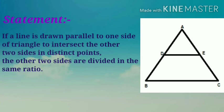The other two sides are divided in the same ratio. So in given figure DE is parallel to BC. So we have to show that AD by DB is equal to AE by EC.